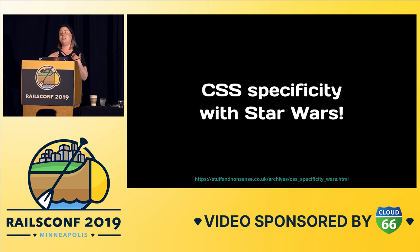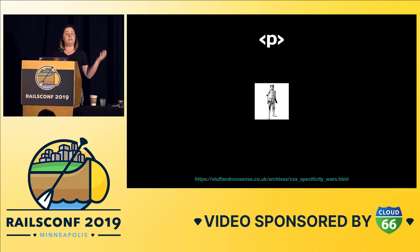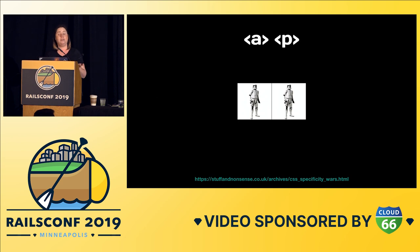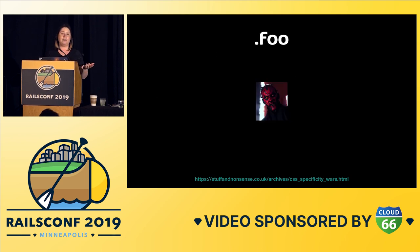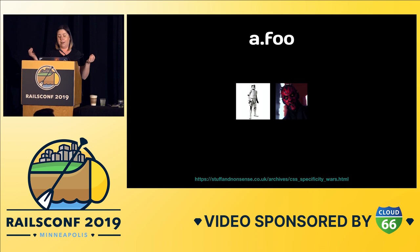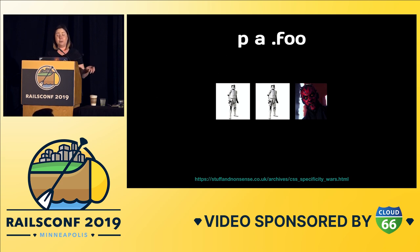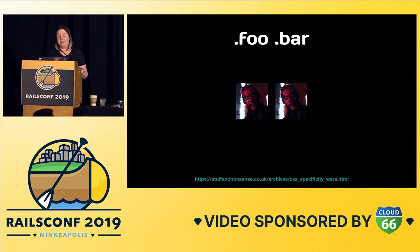These ideas come from a post on Stuff and Nonsense by Andy Clark, who talked about CSS specificity through Star Wars. A P tag is like a stormtrooper — pretty easy to understand. Two element tags: two stormtroopers. A class is like Darth Maul — a little bit more powerful. An element and a class: even more powerful. Two elements and a class — we're getting there. Two classes: that's two Darth Mauls. That's pretty darn specific. Two elements and two classes: we have two stormtroopers and two Darth Mauls — we're getting very specific.